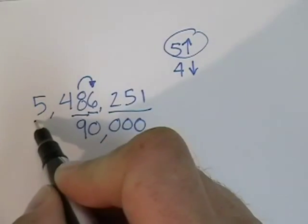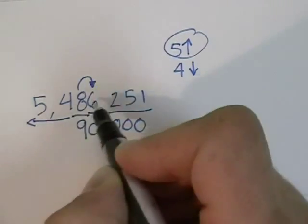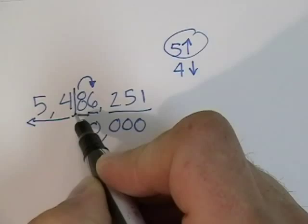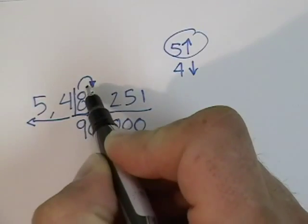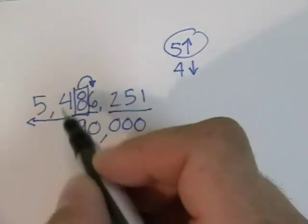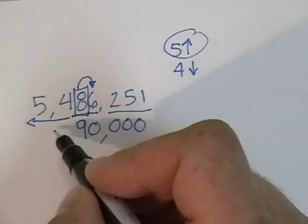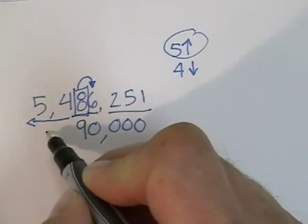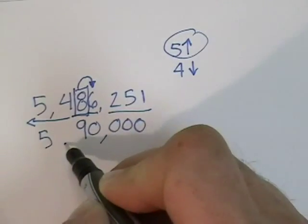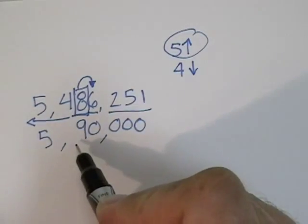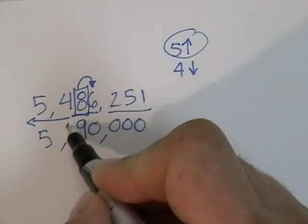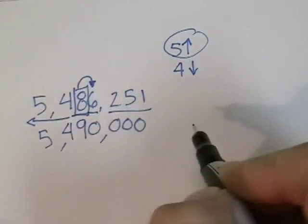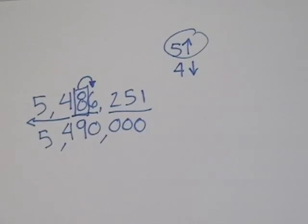Everything to the left of this 8 we just keep — we don't have to worry about it, we just bring it down. So this is now 5,490,000. And that's the number rounded to the nearest ten-thousandths.